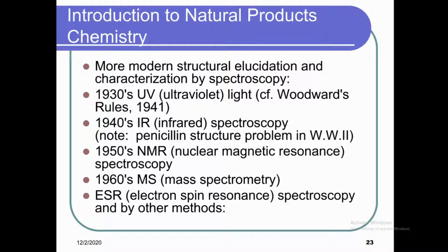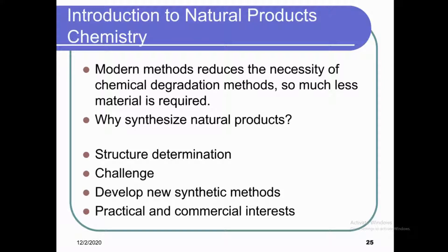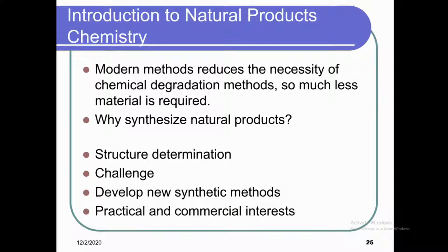More modern structural elucidation uses spectroscopy: in the 1930s, UV spectroscopy with Woodward's rules (1941); in the 1940s, IR spectroscopy (notably the penicillin structure problem in WW2); in the 1950s, NMR spectroscopy; and in the 1960s, mass spectrometry and ESR. Even more modern techniques include ORD (optical rotatory dispersion), circular dichroism, pKa measurements, advanced synthetic and biosynthetic technology, and X-ray crystallography. These modern methods reduce the necessity of chemical degradation. Natural products are synthesized to address structure determination challenges, develop new synthetic methods, and for practical and commercial interests. Thanks for watching, take care, bye.